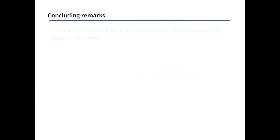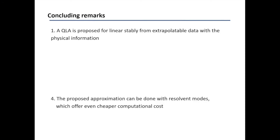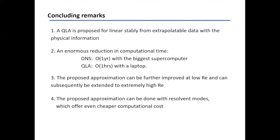To conclude: I proposed a quadrilinear approximation for linearly stable flow, using extrapolatable and minimal data with substantial physical information. The quadrilinear approximation offers enormous reduction in computational time: DNS at Re_tau = 5000 requires one year on the biggest supercomputer with state-of-the-art parallel code, while the quadrilinear approximation needs only one hour on a laptop. The proposed approximation can be improved at low Reynolds numbers with existing data and subsequently extended to much higher Reynolds numbers. Resolvent modes can also be incorporated for even cheaper computational cost.